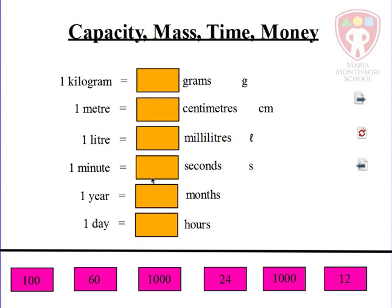If we think that one kilogram happens to be 60 grams, we might think that — put it in the middle and see what happens. No, it's not correct; it's rejected. So this is the activity — let's see how we do it as a class.